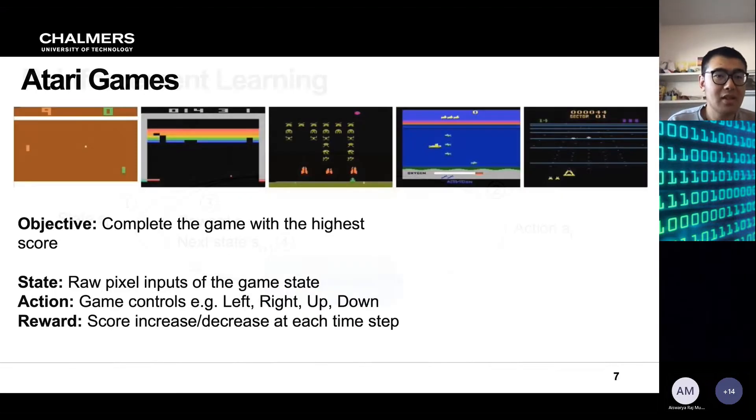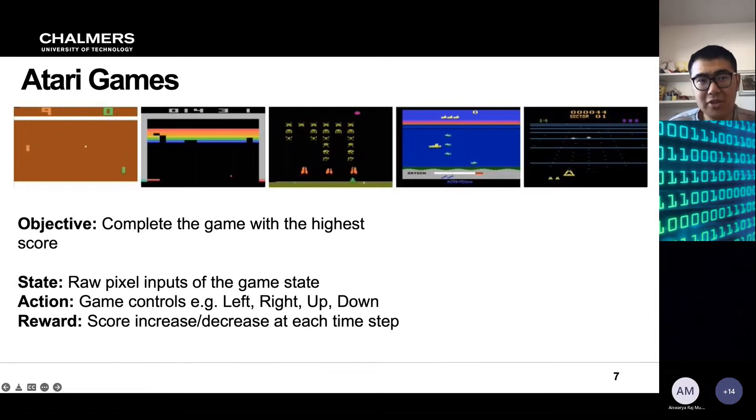So we have several classic applications here which apply reinforcement learning and the first is Atari game. The objective of the Atari game is to complete the game with the highest score, so it is the perfect scenario for reinforcement learning to fulfill their goal. The state in Atari game is the raw pixel inputs of the game state. We can select different actions including the game controls, namely left, right, up and down, and the reward is the score increase and decrease at each time step.